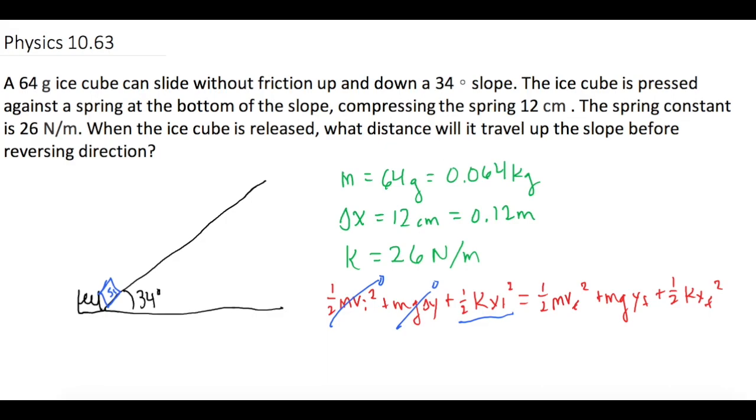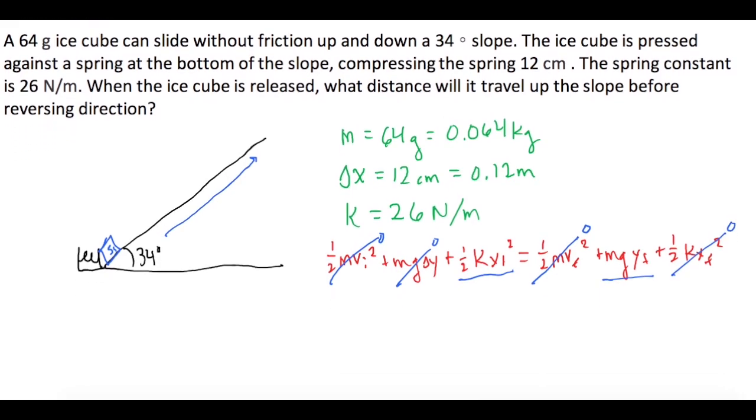Then we want to know how far it can go up until it slides to the very top and then stops and then starts to come back down. So our final velocity is going to be 0. We will have a change in our delta y, so that will stay in the equation. But now our spring isn't compressed anymore, so that's 0.